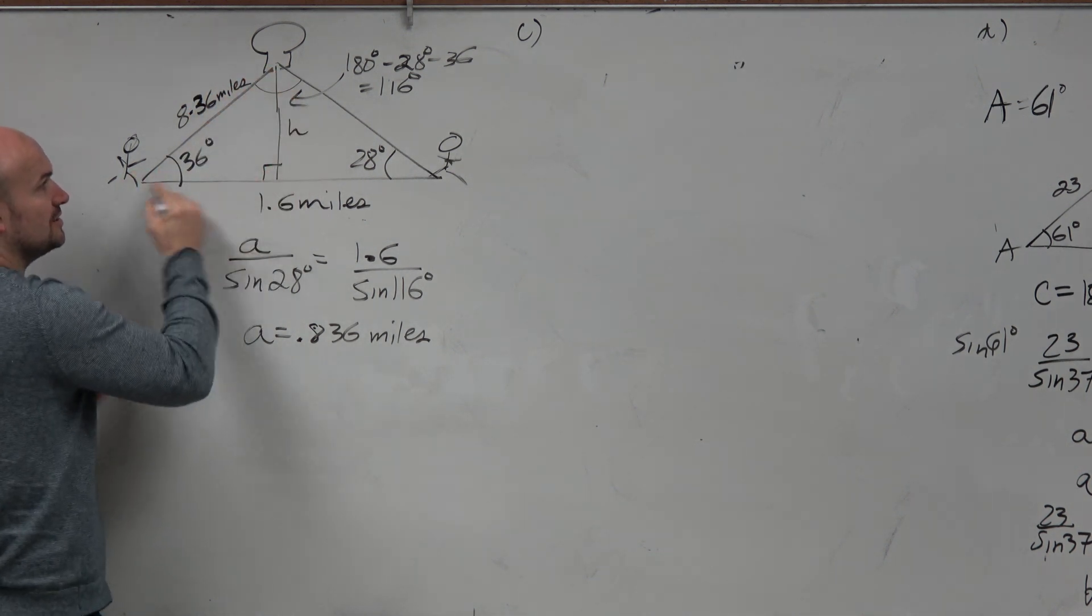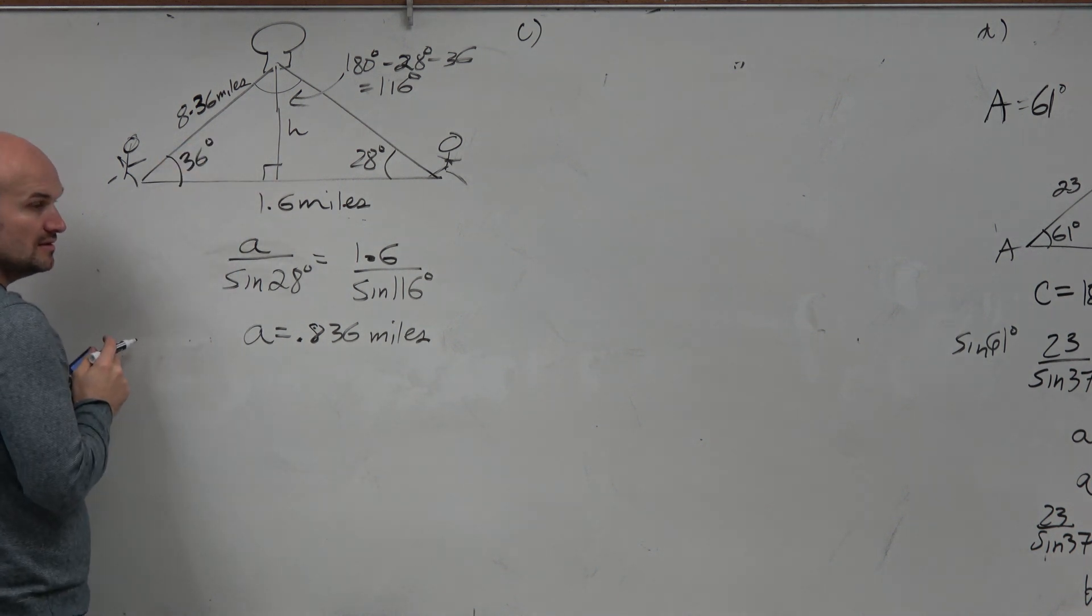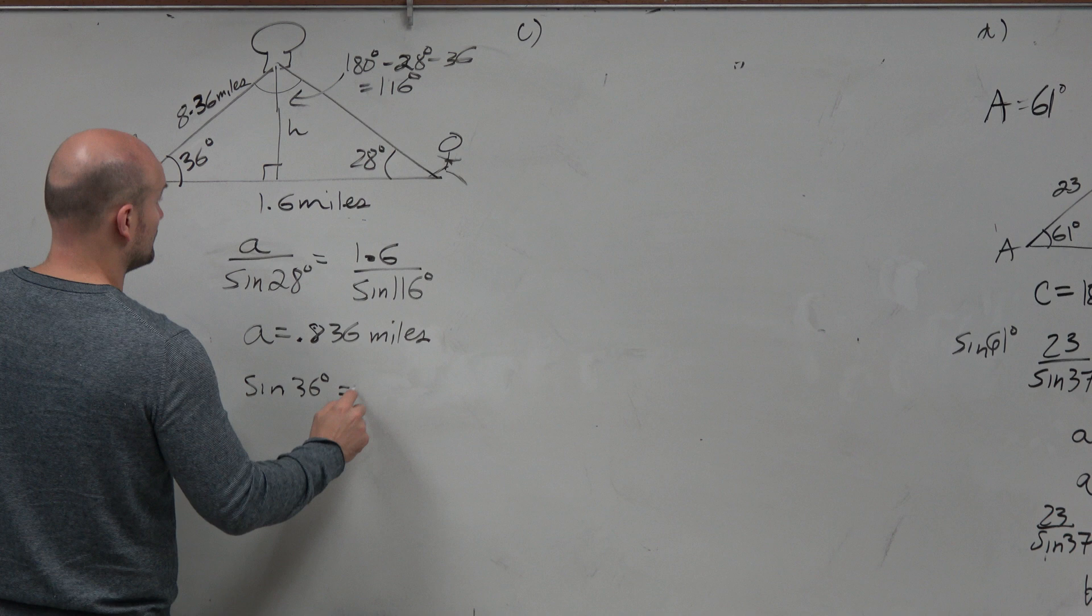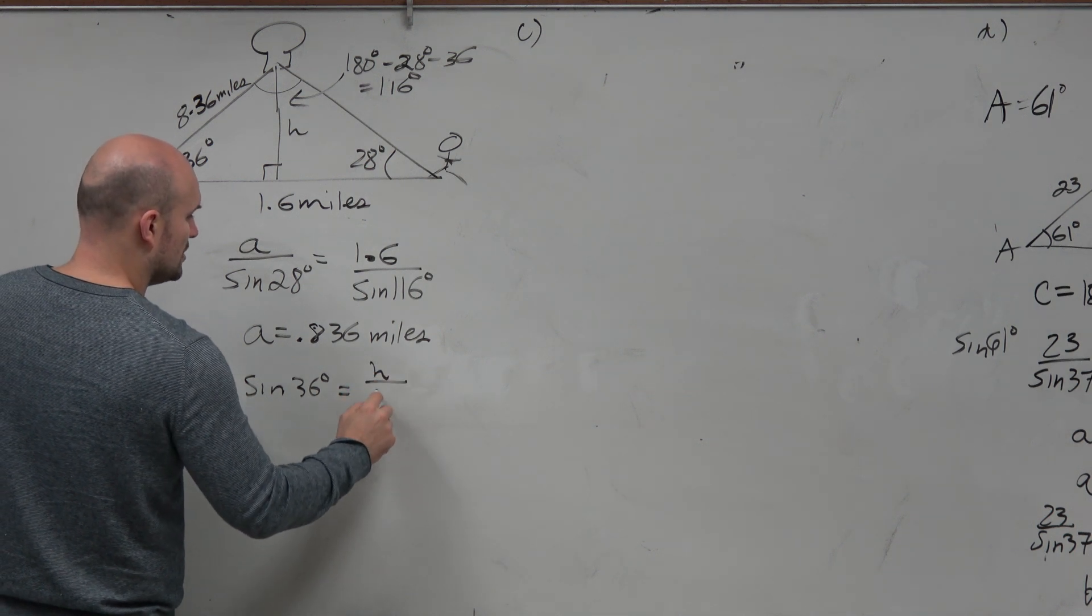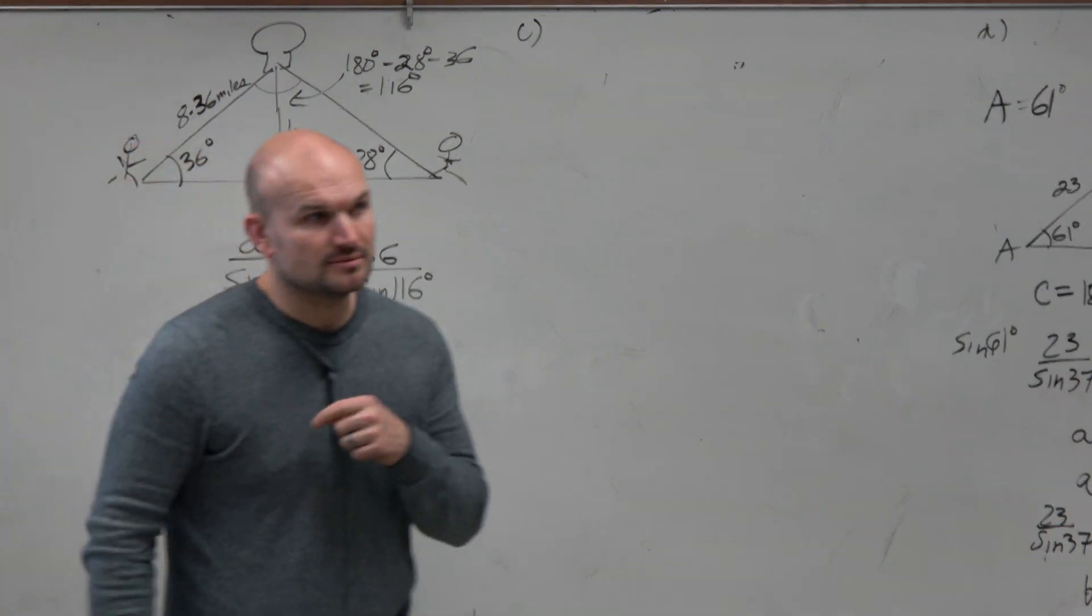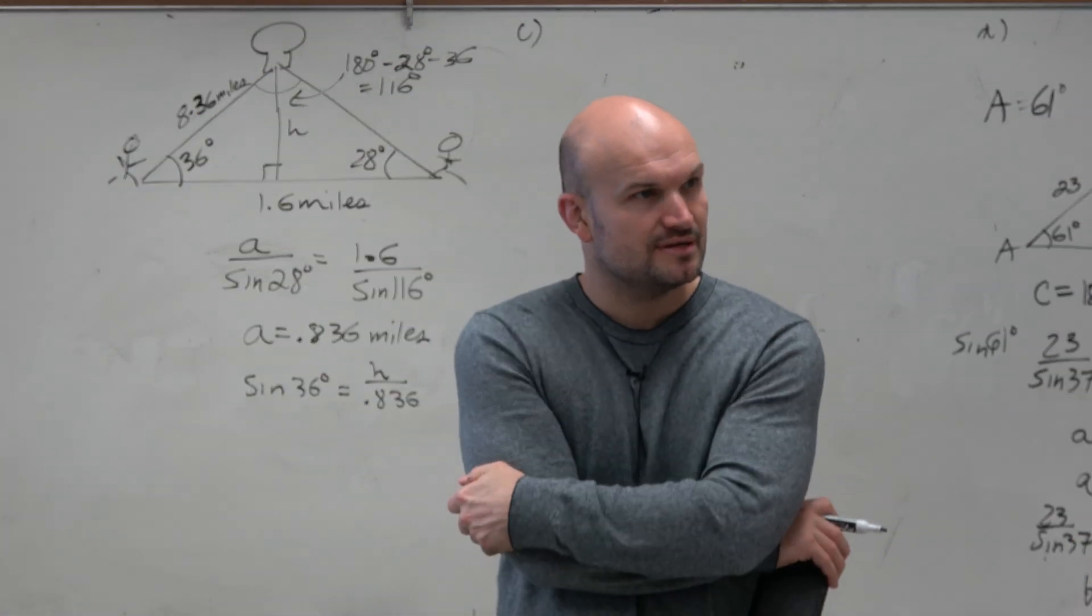However, now do I have a right triangle that I could solve for this? Now I could say the sine of 36 degrees equals H over 0.836. Now, there's a problem though. Didn't I tell you not to use rounded answers? Yes.